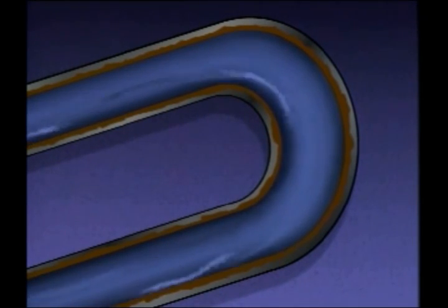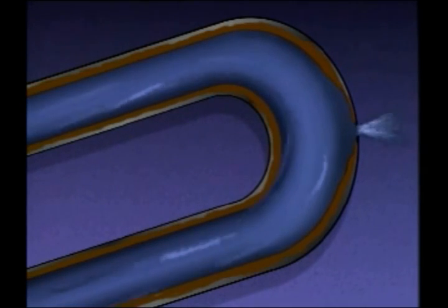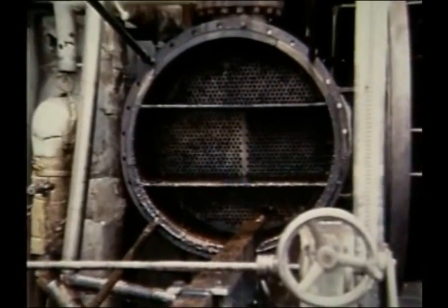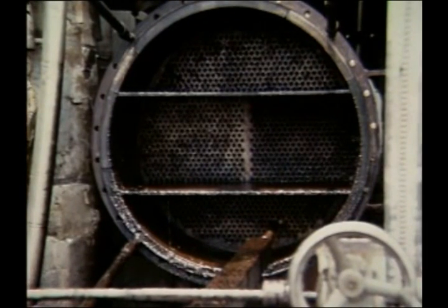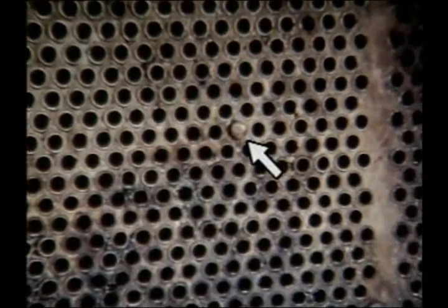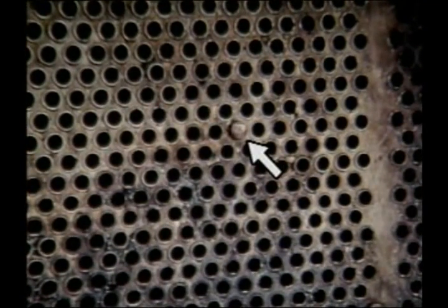Weakened tube metal from corrosion may lead to tube leakage. If a tube leaks, the heat transfer process is affected, but an even more serious problem is the contamination of fluids flowing through the heat exchanger. When leaks occur, the heat exchanger is usually shut down for inspection and repair. If only a few tubes are leaking, they could be plugged and the heat exchanger put back into service at reduced efficiency. If there are a lot of tubes leaking, more extensive repair work may need to be done.